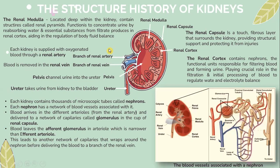The Structural History of the Kidney. The renal medulla, located deep within the kidney, contains structures called renal pyramids. Their function is to concentrate urine by absorbing water and essential substances from filtrate produced in the renal cortex, aiding in the regulation of fluid balance. Each kidney is supplied with oxygenated blood via the renal artery, and blood is removed through the renal vein.